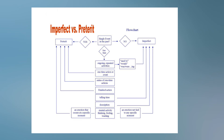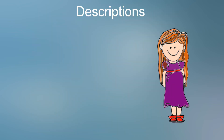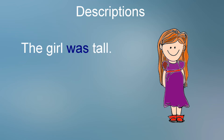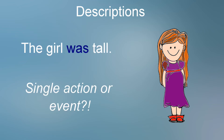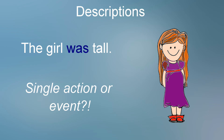Continuing downward, in the next box we find that descriptions almost always use the imperfect. It might help to return to the original filter: is it a single event in the past? Let's say that we want to express 'the girl was tall.' How is that description ever a single action or event? It would be a strange set of circumstances that would require she was tall at some specific event or finished action. Therefore, imperfect is the most logical form to use here.